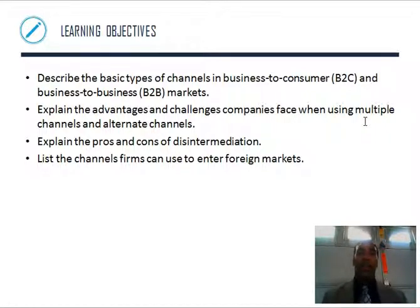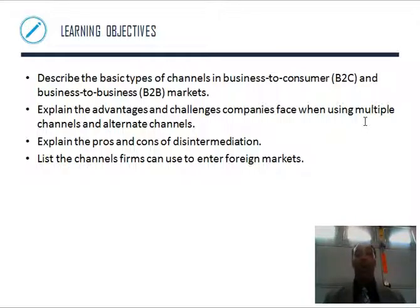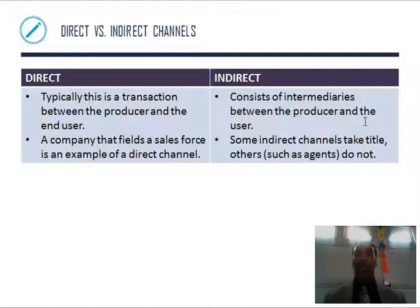More learning objectives: describe the basic types of channels — business-to-consumer (B2C) and business-to-business (B2B). Explain the advantages and challenges companies face when using multiple and alternate channels. Explain the pros and cons of disintermediation, and list the channels firms can use to enter foreign markets. A lot of times you don't want to open a brand new plant in China — you might want to do foreign direct investment, investing in a company that's already out there and knows the lay of the land.